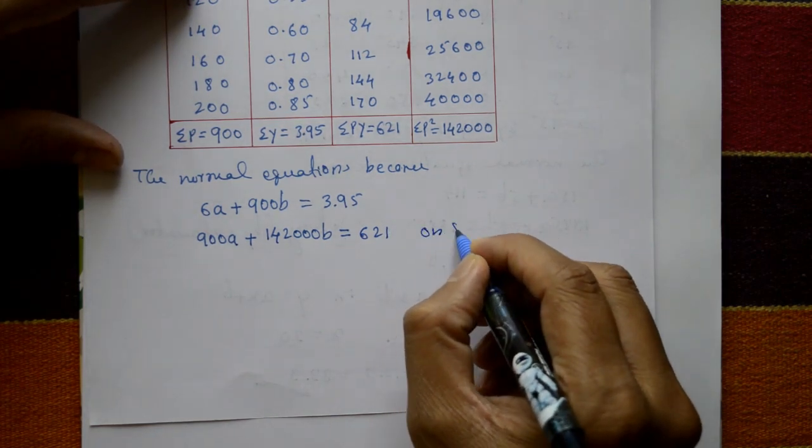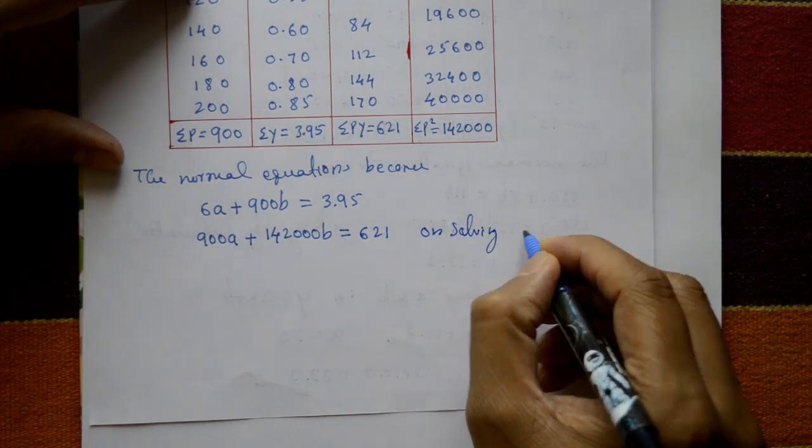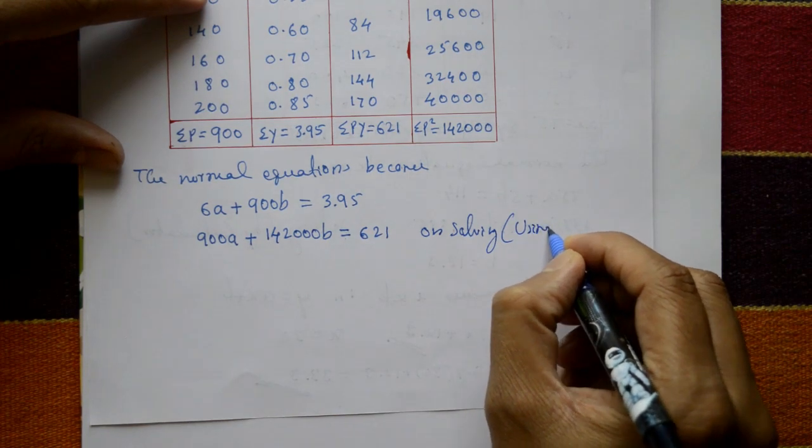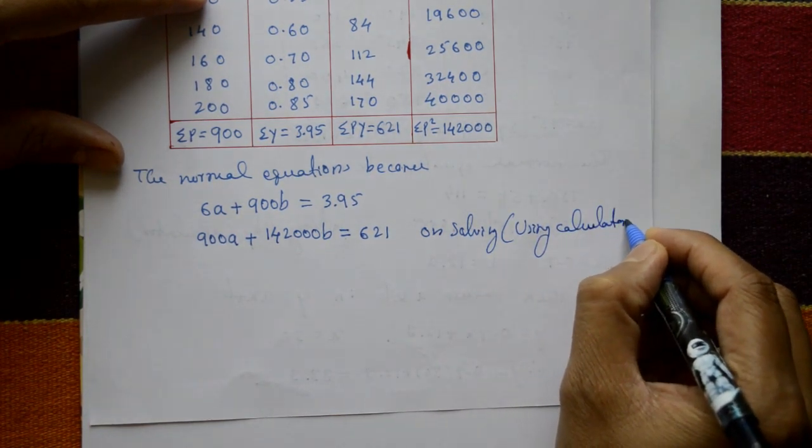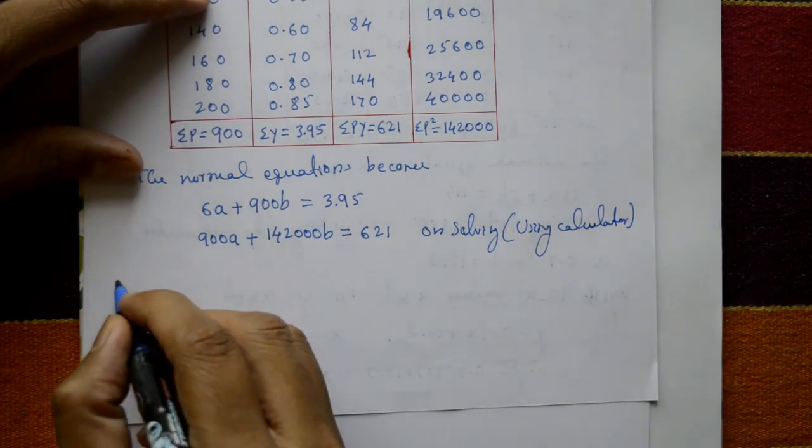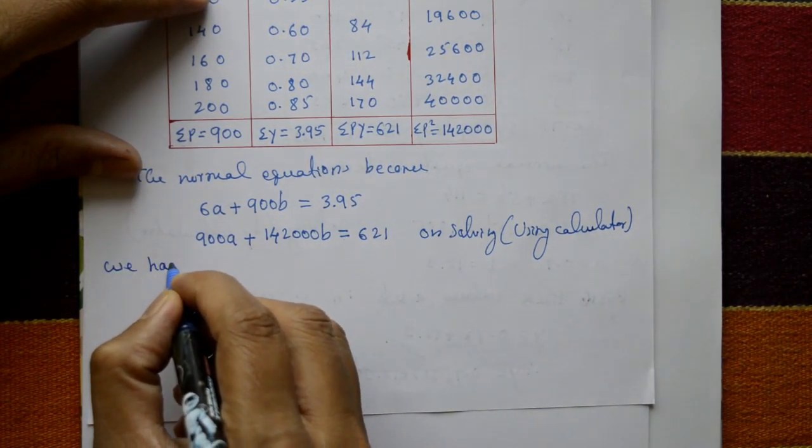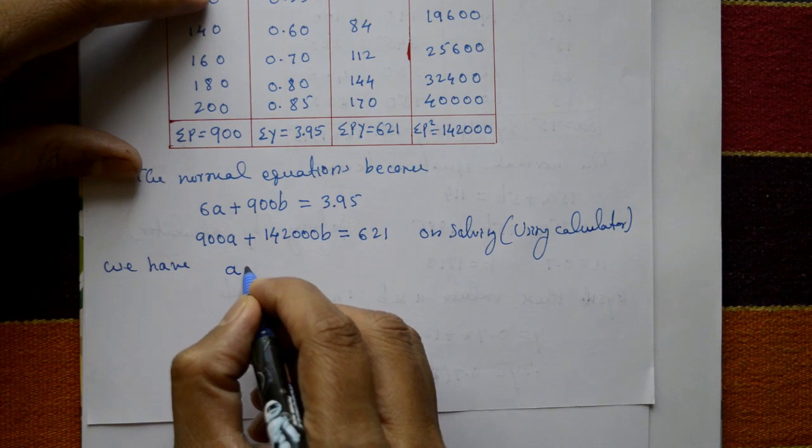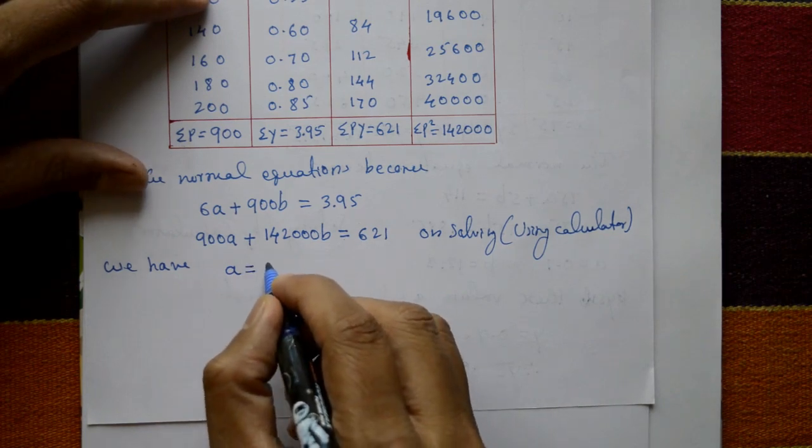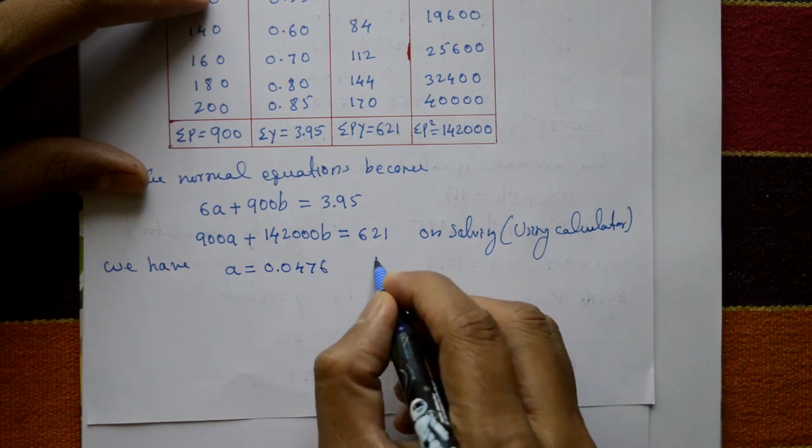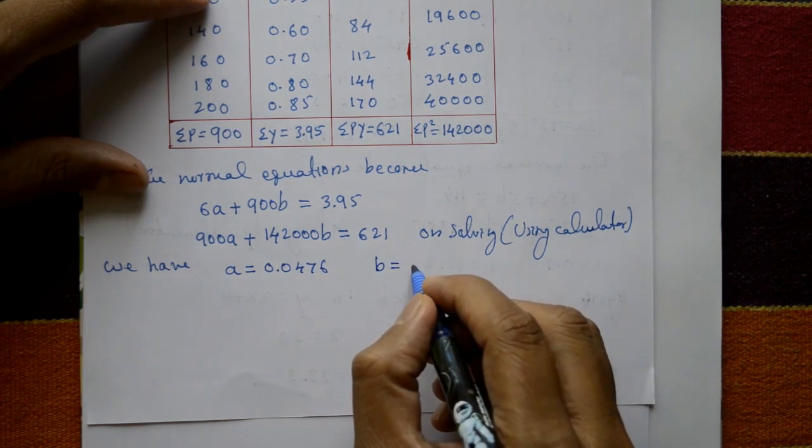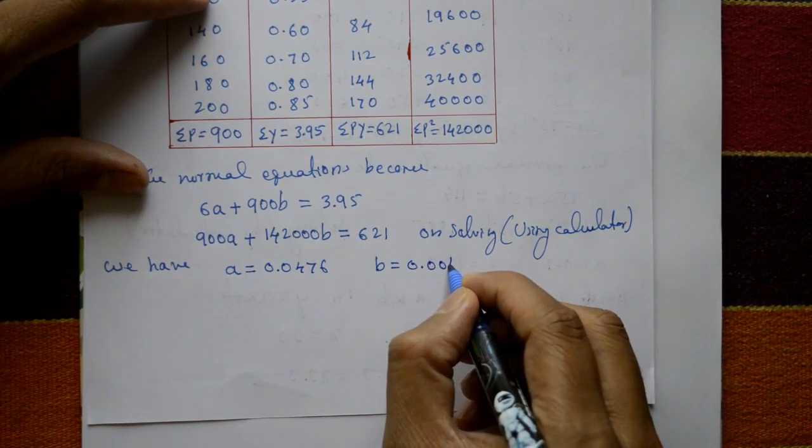On solving using calculator, we have: A is equal to 0.0476 and B is equal to 0.0041.